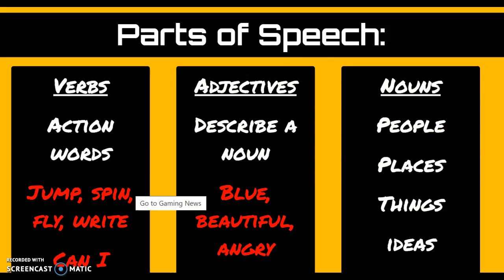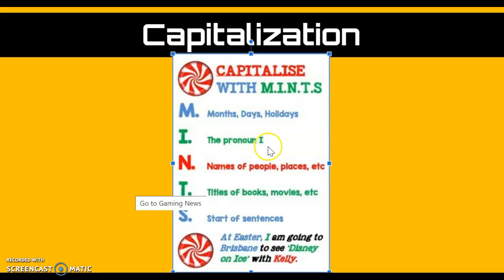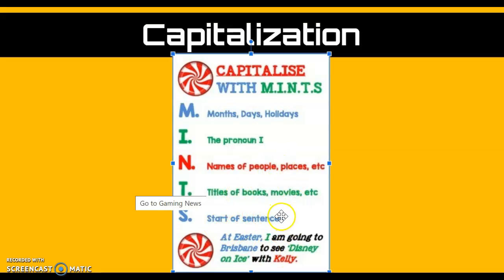Now we're going to look at those again today, but we're going to add in capitalization when we're looking at our sentences. Remember that we capitalize words that are a month, day, or holiday; the pronoun I; names of people, places, and things; titles of books, movies, and songs; and the start of the sentence.